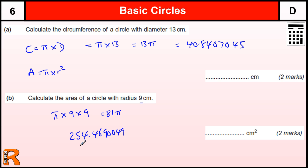So any correct rounding of that — so 254, 254.5 — doesn't really need any more than that. You can just write the whole number down and it will allow that as well. It doesn't ask you to round to any particular degree of accuracy, so that's fine.